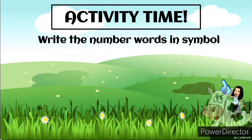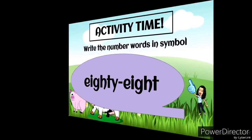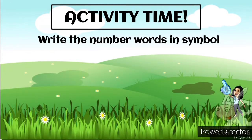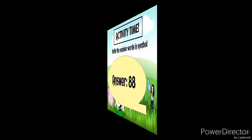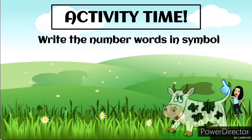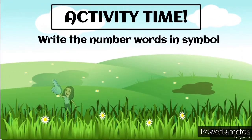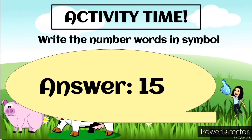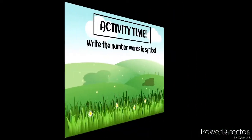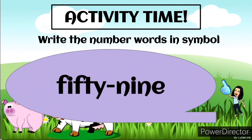Now write the number words in symbols. We have eighty-eight — that's 88. Another one: fifteen — that's 15. And another: fifty-nine — that's 59.